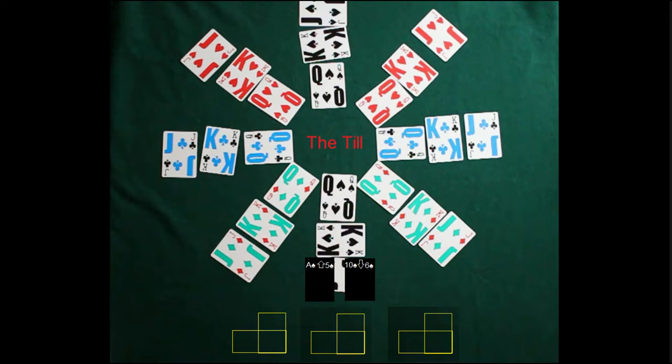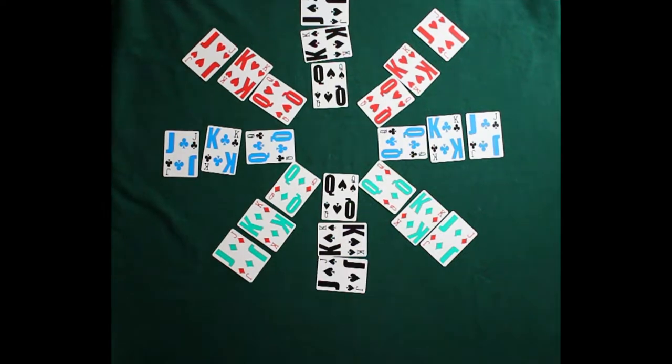We'll have three waste piles where we deal out pairs of cards, a vertical pair and a horizontal card. What we're going to be building on, in suit, on the jack, on both sides, either an ace or a ten.